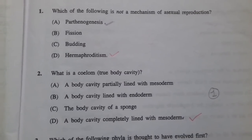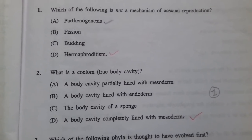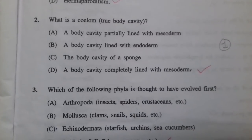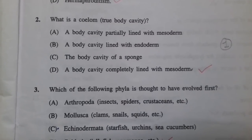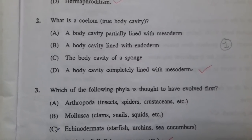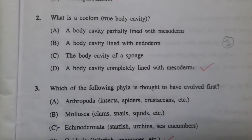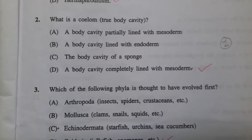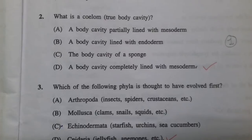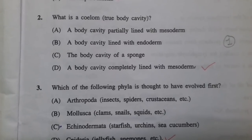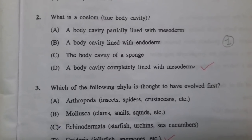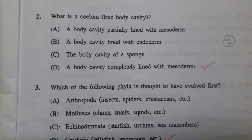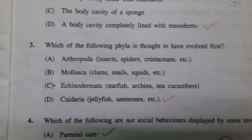However, parthenogenesis is also a type of asexual reproduction. The next question is about the requirement of a true body cavity — it should be a body cavity filled and completely lined with mesoderm.